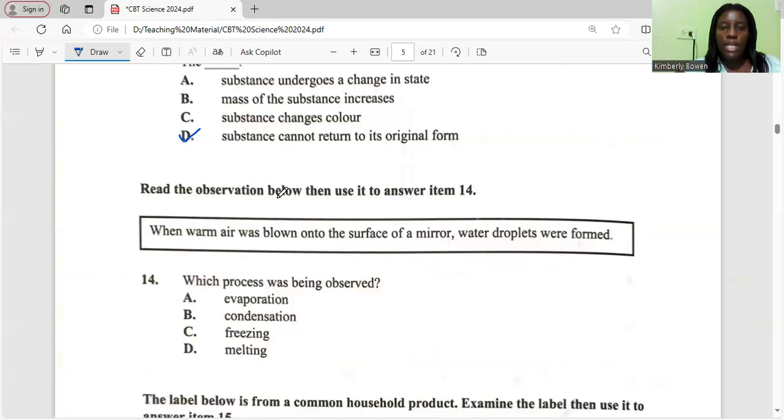Read the observation below, then use it to answer item 14. When warm air was blown onto the surface of the mirror, water droplets were formed. Which process is being observed? It's condensation.